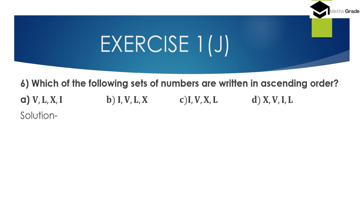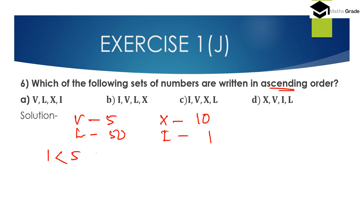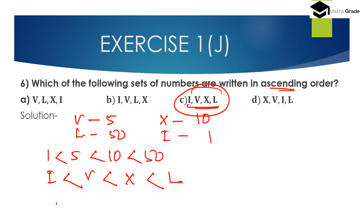Question number 6: Which of the following sets of numbers are written in ascending order? V has value 5, L has value 50, X has value 10, and I has value 1. Ascending order means increasing order: 1 is less than 5, less than 10, less than 50 — that is I, V, X, L. So option C, which is I, V, X, L, is the correct answer. This set of Roman numerals is written in ascending order.